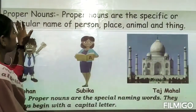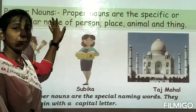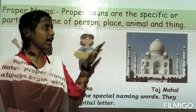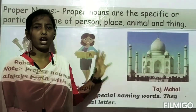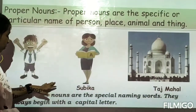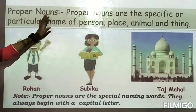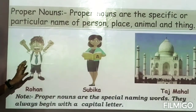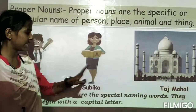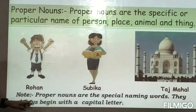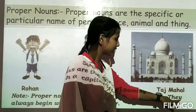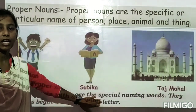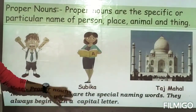So, what is the difference between proper noun and common noun? A proper noun is a special, specific name, while a common noun is a general name. An important rule: proper nouns always begin with a capital letter. Proper nouns are special naming words and they always start with a capital letter.